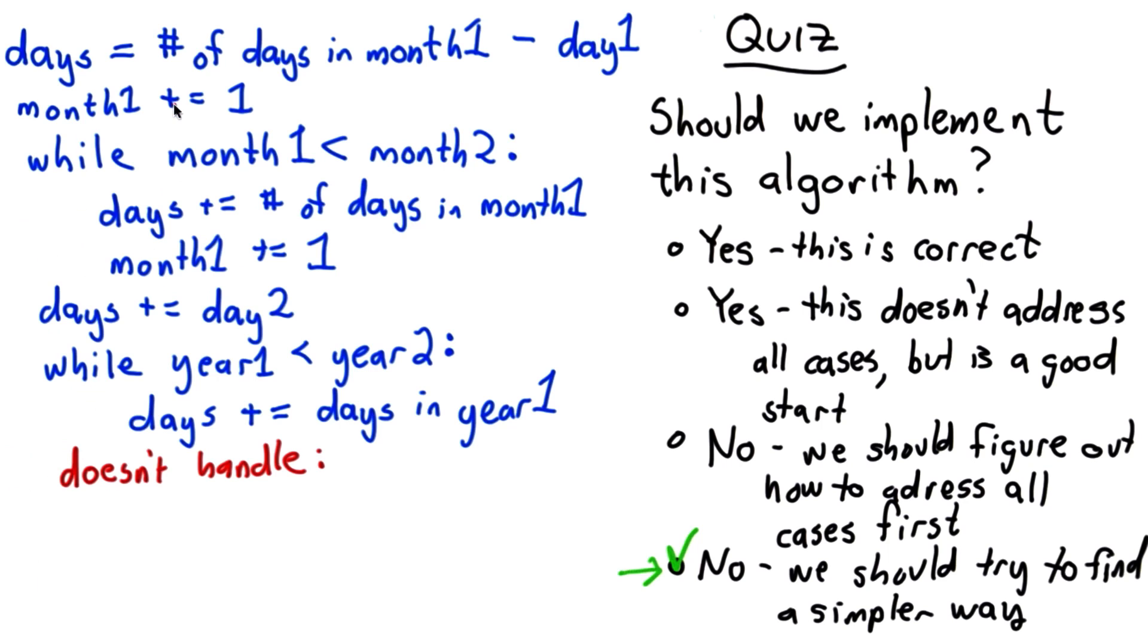So let's think about the cases that it doesn't handle. It doesn't handle the case where the initial days are in the same month. And it doesn't handle that because we're adding all the days in month 1 to the days. And then if day 2 was also in month 1, we're going to add that. We're going to get the wrong answer.